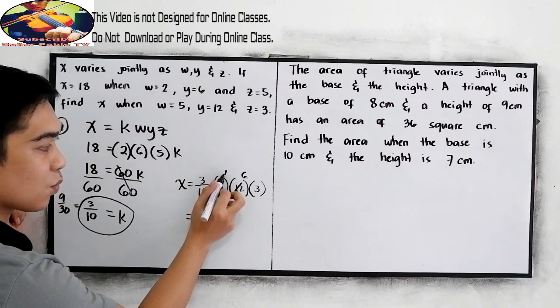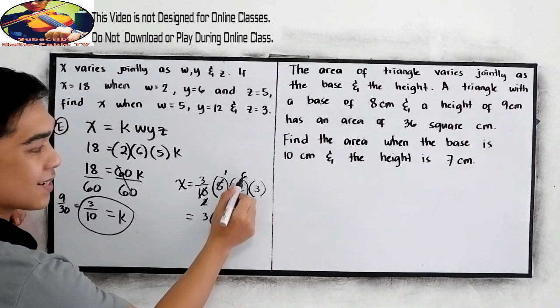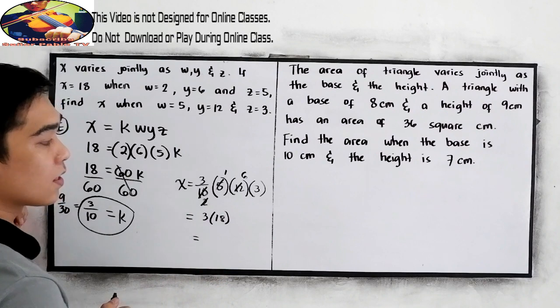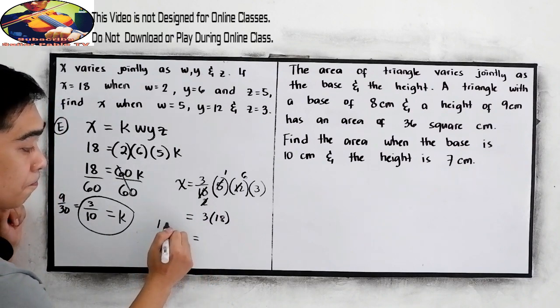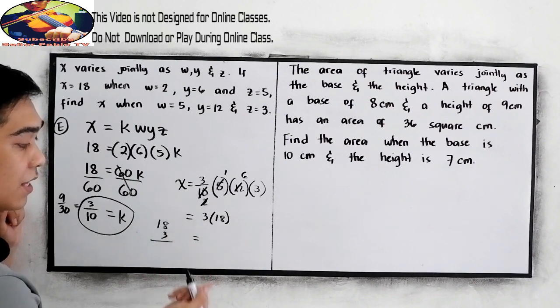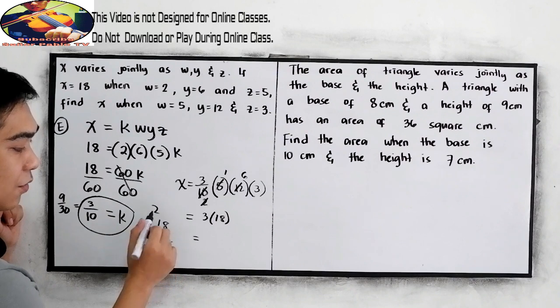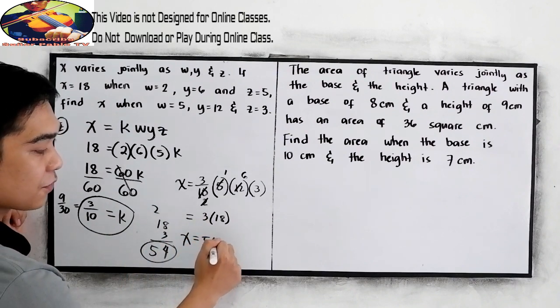3 times 1 is 3, 6 times 3 is 18. 18 times 3 equals 54. So the value of x is 54.